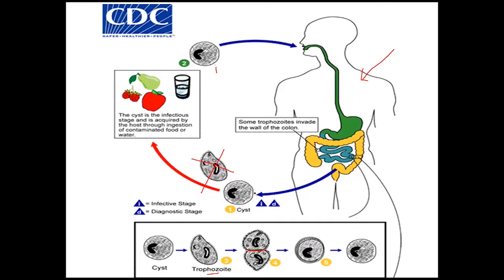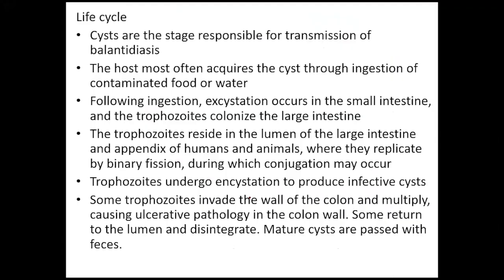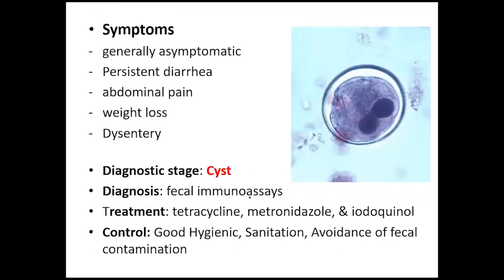In the large intestine, trophozoites can invade the mucosal layer and cause ulcerative pathology. This is the direct life cycle of Balantidium coli.